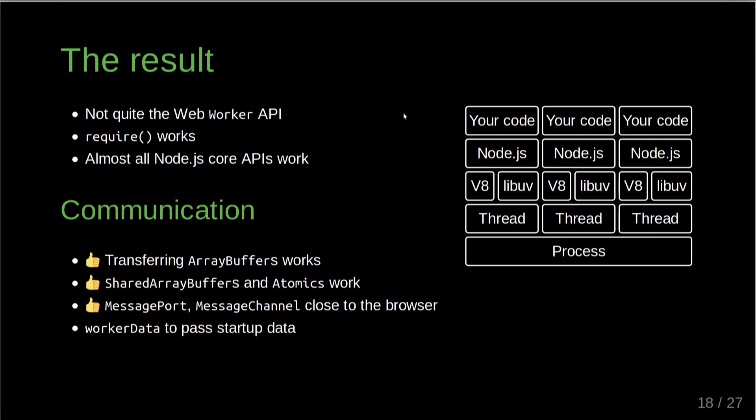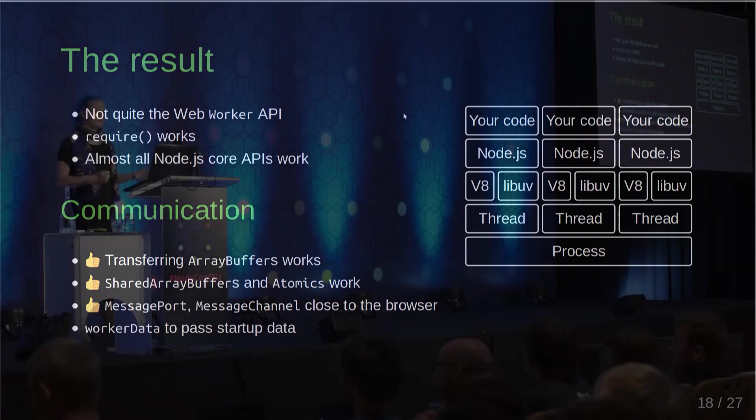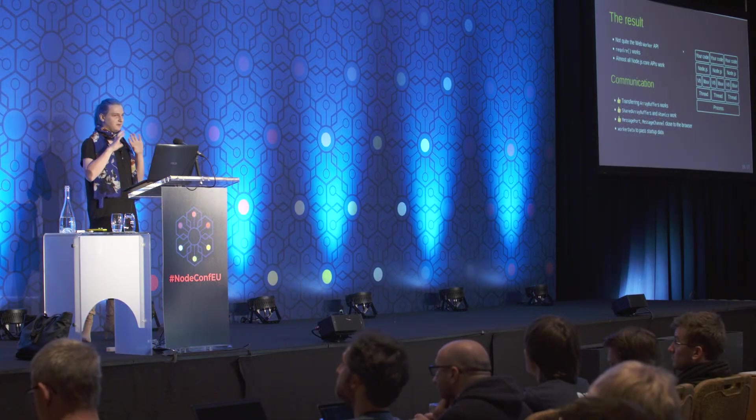As far as communicating between different threads goes — these are the things about workers that actually make them special and fill actual use case gaps. You can transfer array buffers from one thread to another. We have shared array buffer support, so you can actually share memory between threads. It's limited to binary data, but it's a pretty powerful tool. We also have Atomics available, which allows you to do things concurrently in a more efficient way than traditional locking approaches, and lets you implement mutexes and condition variables in JavaScript.